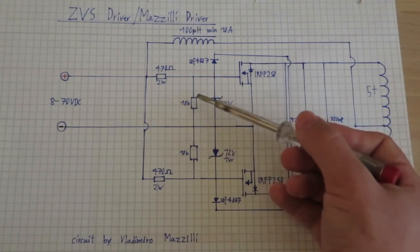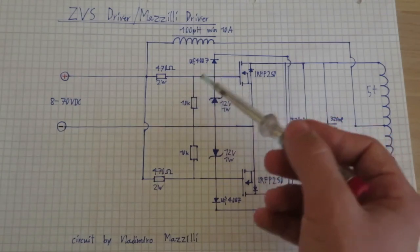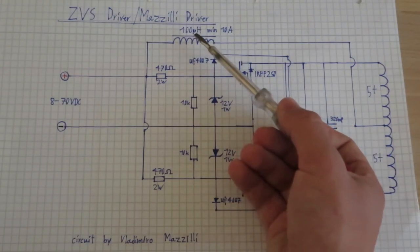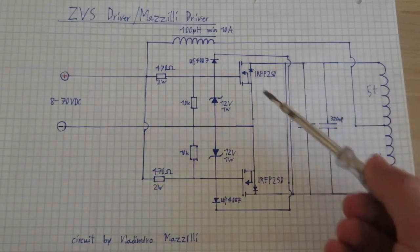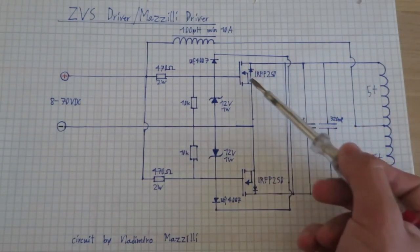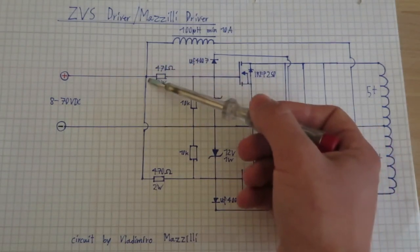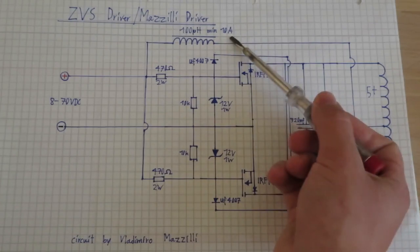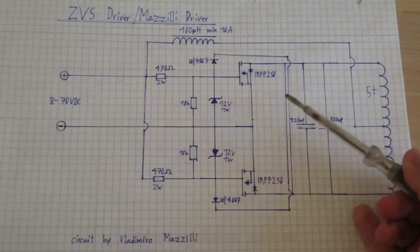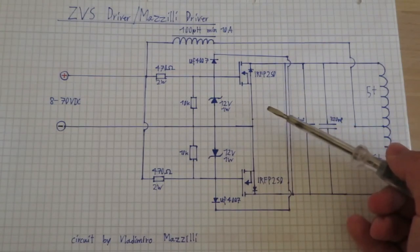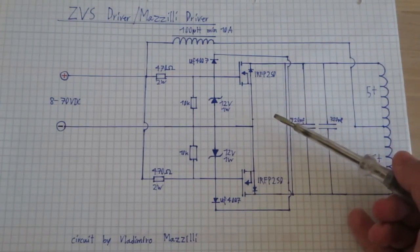And then here we have a 100 microhenry choke, and this choke just kind of limits the current flow in the circuit and prevents the transistors from dying. And since the entire current of the circuit is going to go through this choke, it should be rated at at least like 10 to 15 amps, because the ZVS circuit will draw high currents in its operation.